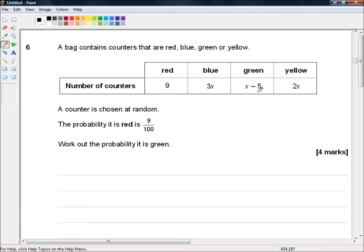So we want to know the probability that it's green, so we're going to need to know how many green counters there are. And it's x minus 5, so we're going to need to find out the value of x.